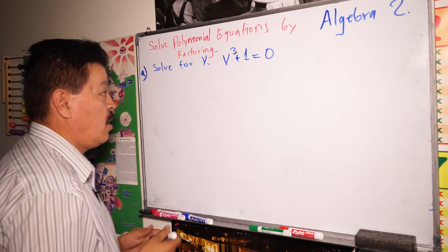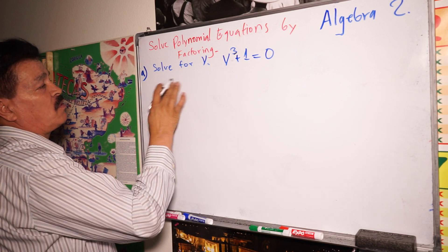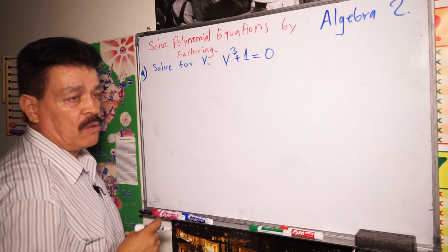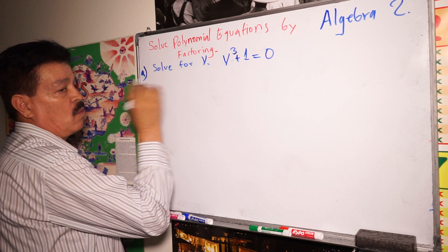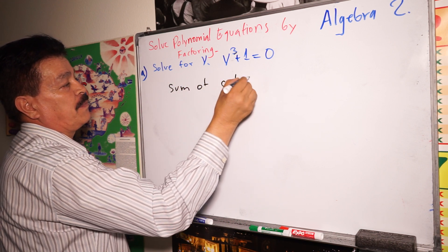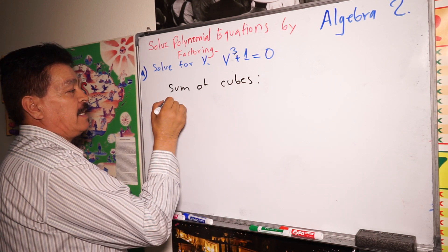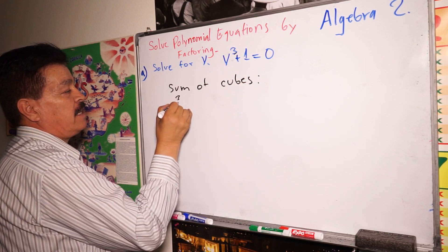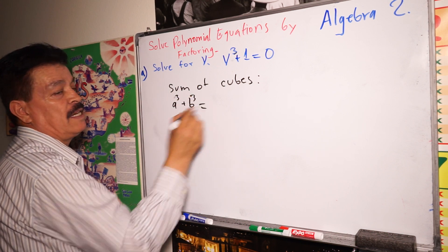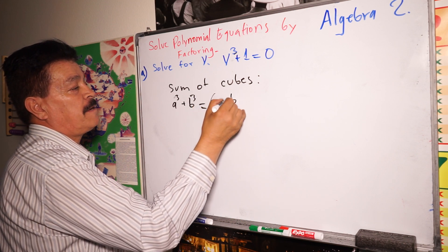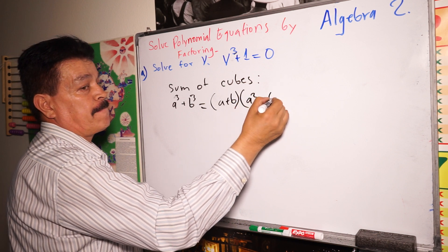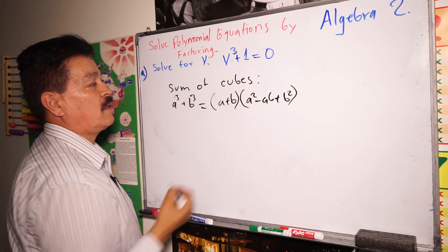Before we solve the problem, I would like to write these two rules. Number one: sum of cubes. Remember, this rule is like this — A to the third power plus B to the third power equals A plus B, times A squared minus AB plus B squared. This is the sum of cubes.